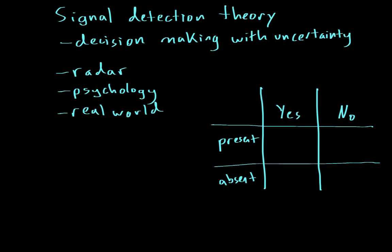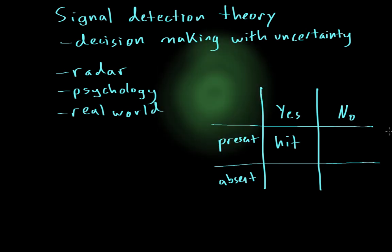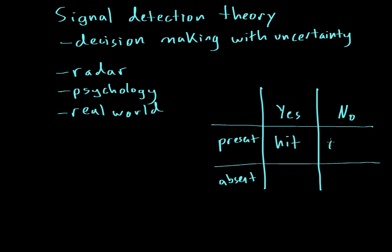There are a few different possibilities. If you say yes, the light is definitely green, you're 100% sure, then that would be a hit. However, if the light is present, or maybe it's really faint, but you're not 100% sure whether it's green or not, you might say no. And since the signal is present and you're saying no, that's a miss. Another possibility would be the signal being absent, but you say yes, and that would be a false alarm. And the final possibility is that the signal is absent, and you say no, and that's correct, so that would be a correct rejection.